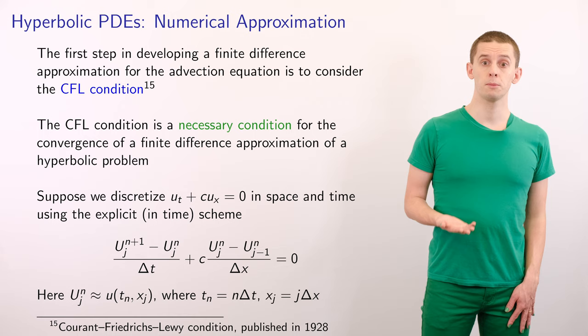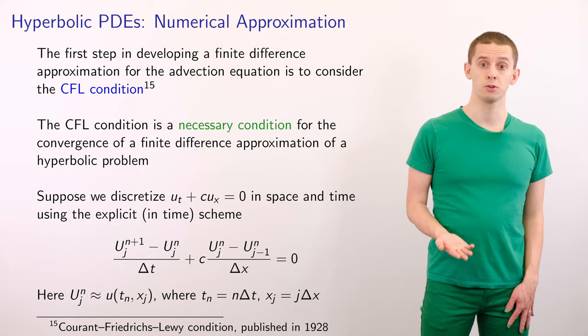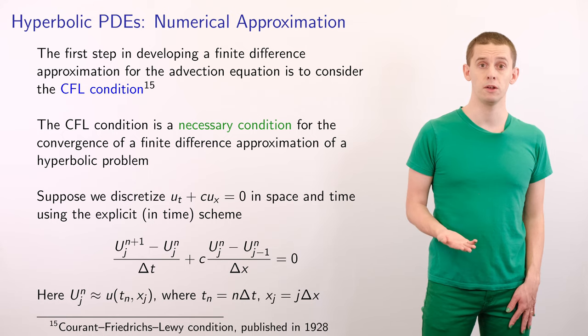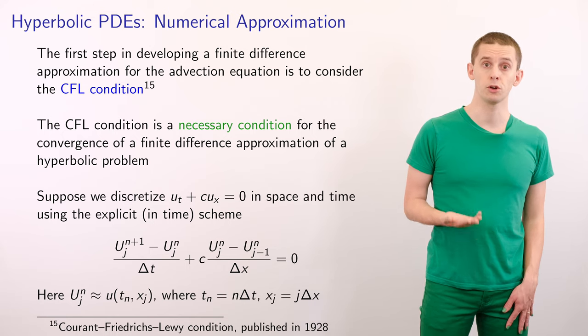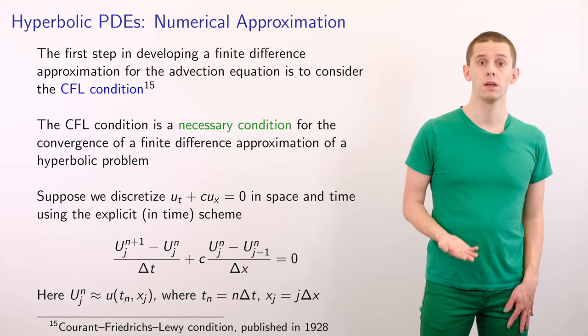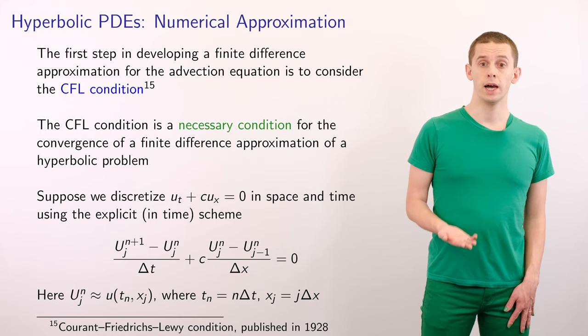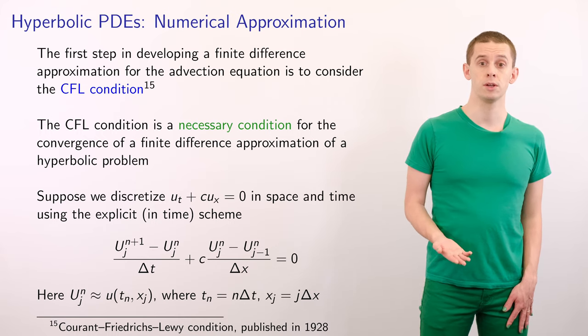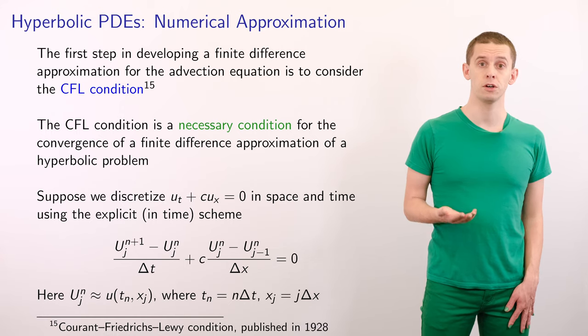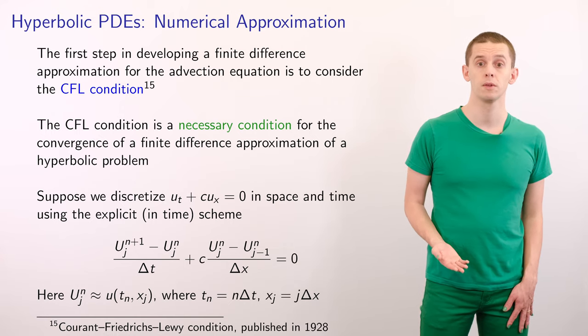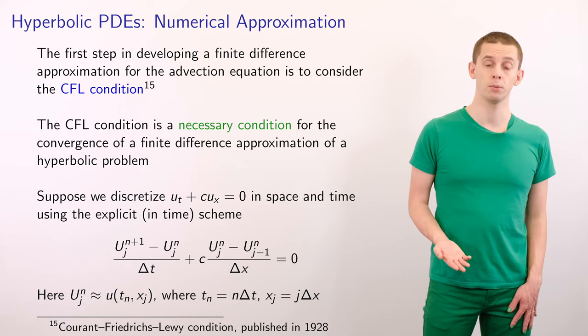Now, the first step in developing a finite difference approximation for the advection equation is to consider the CFL condition, named after Courant, Friedrichs and Louis, and this was published in 1928. And the CFL condition is a necessary condition for the convergence of a finite difference approximation to a hyperbolic problem.